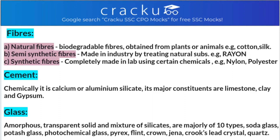Major types of glass are: soda glass or soft glass, potash glass or hard glass, photochromatic glass, pyrex glass, flint glass, crown glass, jena glass, crookes glass, lead crystal glass, and quartz glass or silica glass. The important one is quartz glass or silica glass, as ultraviolet rays pass through it — it is used in ultraviolet lamps and laboratory equipment.